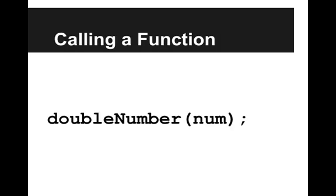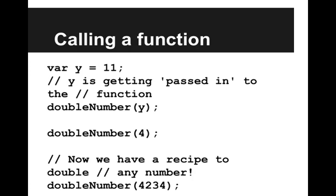Then when we call that function, we write double number and pass it in some variable or some number. I'll show a few examples here. Let's say we have a variable y that's equal to 11, and then y is getting passed into the double number function. We can call double number on the value 4, or at the bottom, we call double number on 4,234. At this point, we'll go into our code editor and continue to play around with this.